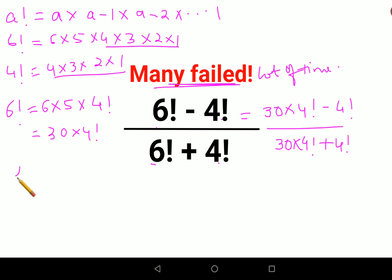So from this, I can take the 4 factorial out. I am left with what? 30 minus 1. Here also we have 4 factorial and then we have 30 plus 1. So this is cancelling. I am left with what? 30 minus 1 which is 29 upon 30 plus 1 which is 31.